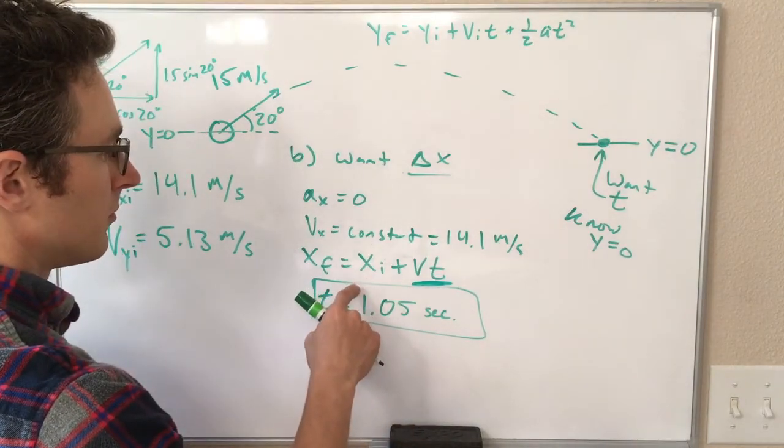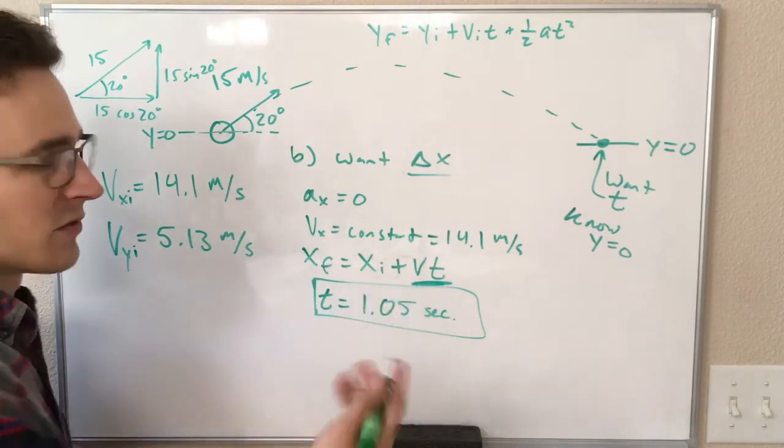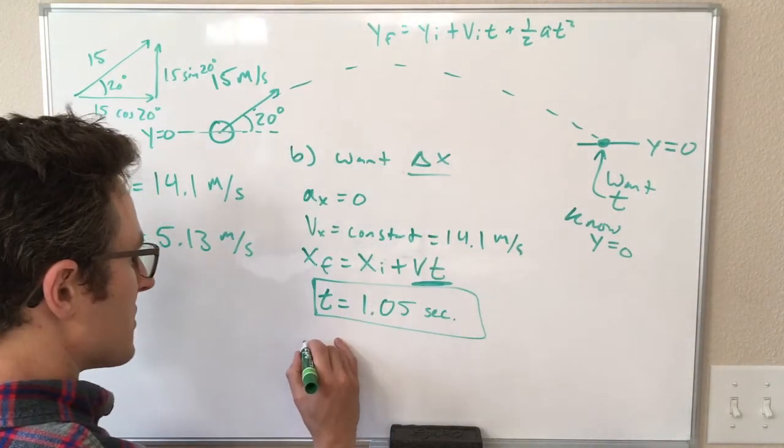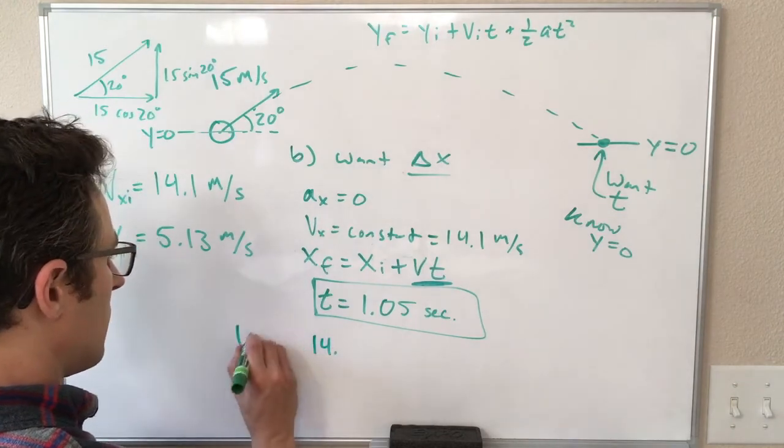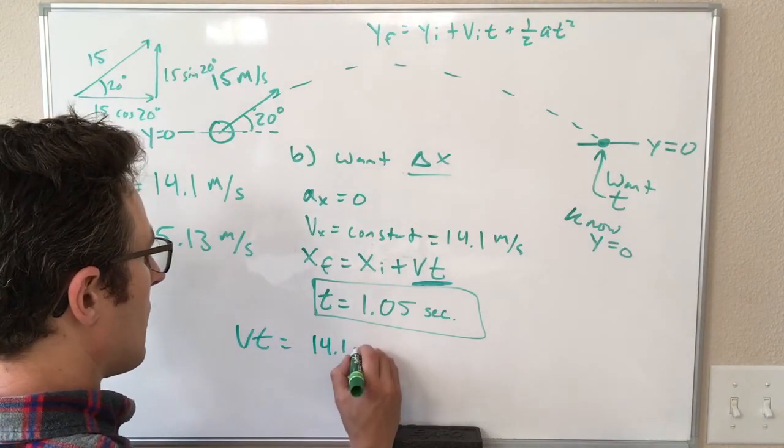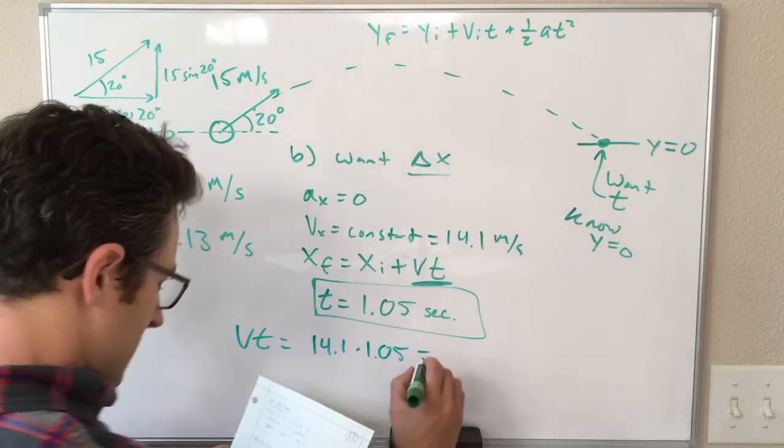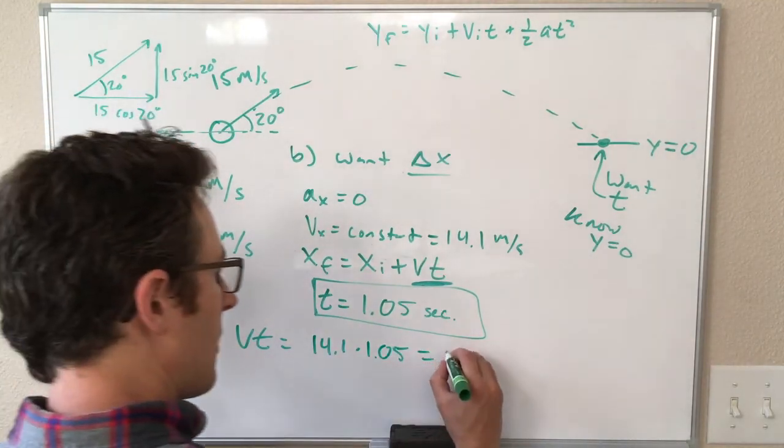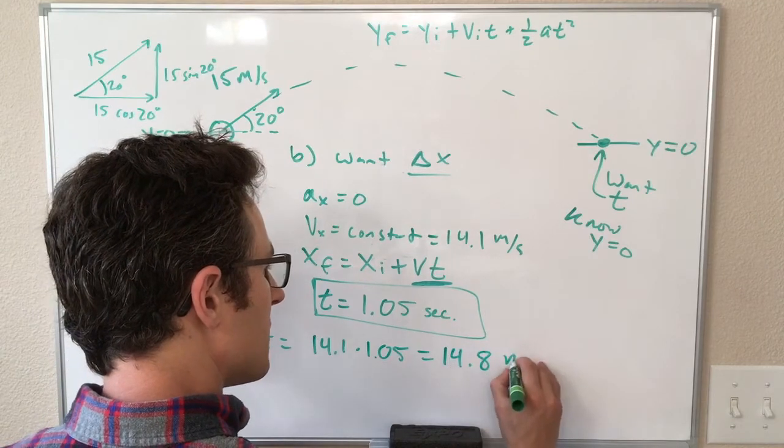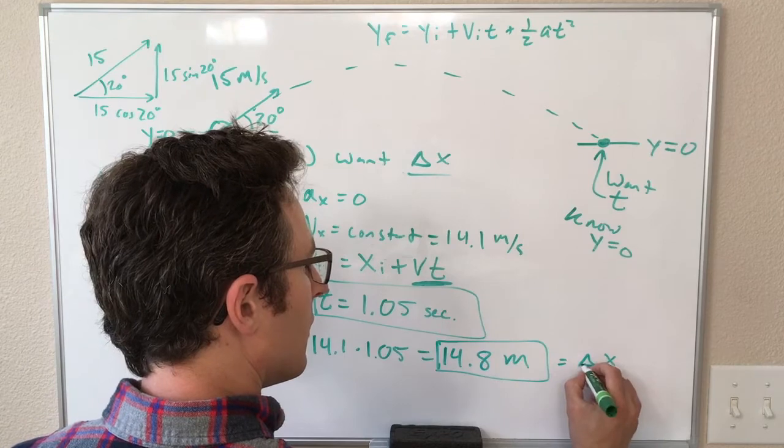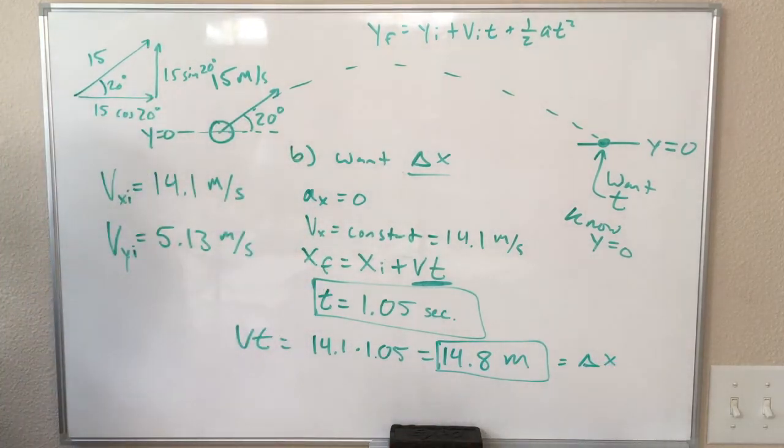So V is 14.1 meters per second. And our time is 1.05. And multiply this together, we get 14.8 meters. So that is our distance in the x-direction.